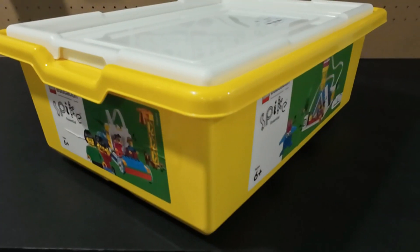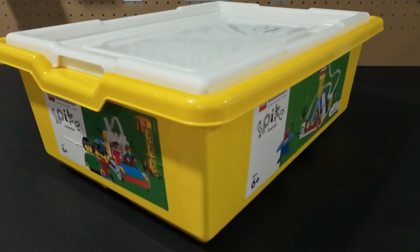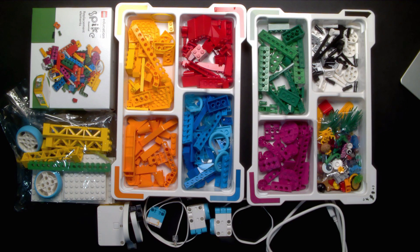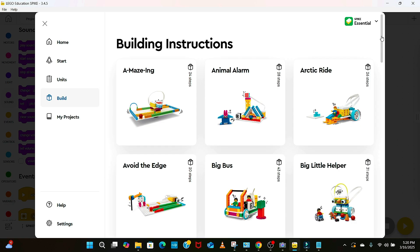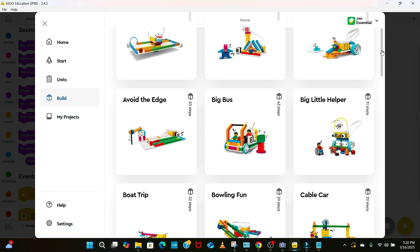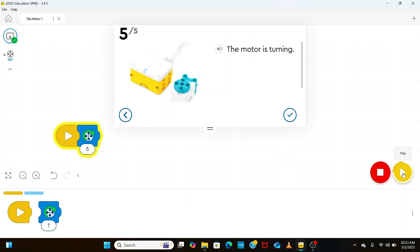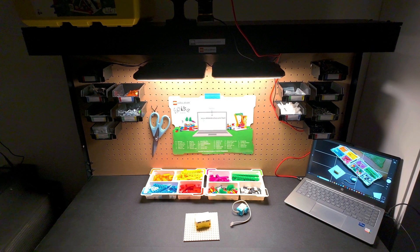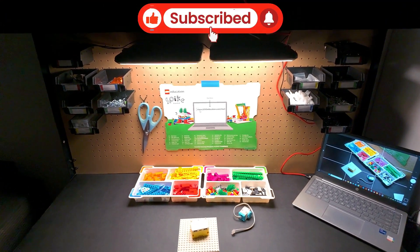To kick things off, we're launching a video series using the Spike Essentials kit. This kit is perfect for elementary school kids who are new to robotics. In each episode, we'll create a brand new bot and also understand how it works. So let's get ready to build, learn and have fun.